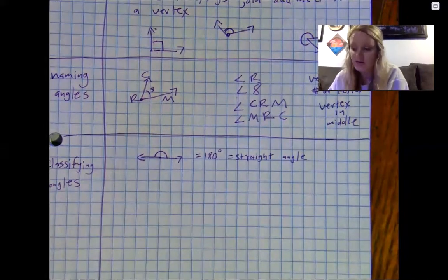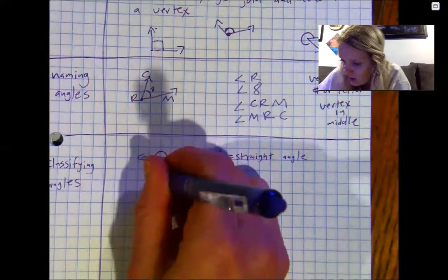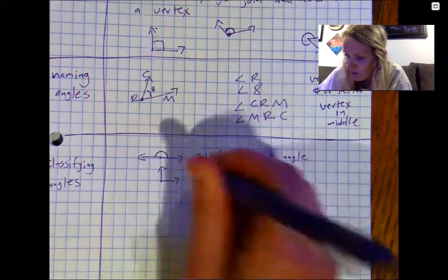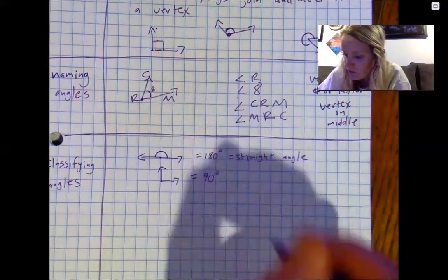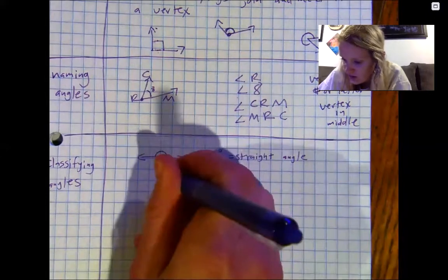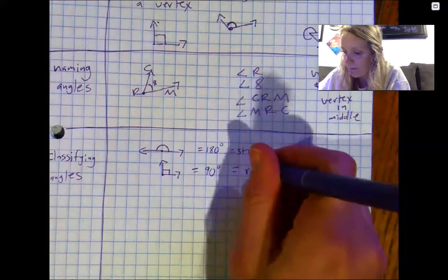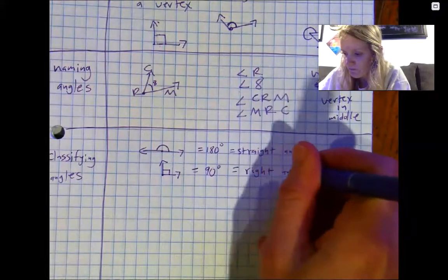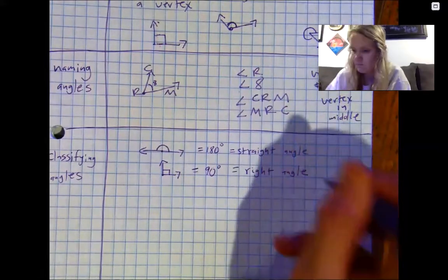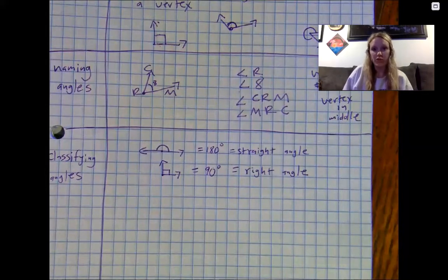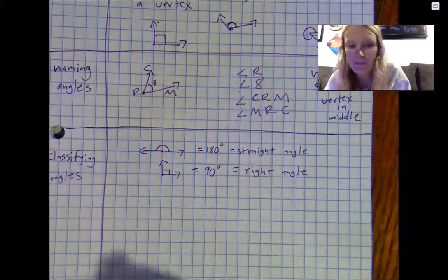Some more angles that are good to know: an L shape — that is a 90-degree angle. We use a small square symbol to designate that it is a 90-degree angle. We call this a right angle. These are two important angles to know for the rest of this unit.